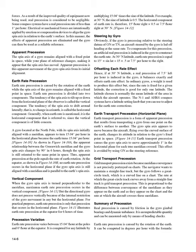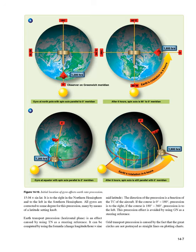Summary of precession. Real precession is caused by friction in the gyro gimbal bearings and dynamic unbalance. It is an unpredictable quantity and can be measured only by means of heading checks. Earth rate precession is caused by the rotation of the earth. It can be computed in degrees per hour with the formula 15.04 times sine latitude. It is to the right in the northern hemisphere and to the left in the southern hemisphere. All gyros are corrected to some degree for this precession, many by means of a latitude setting knob. Earth transport precession (horizontal plane) is an effect caused by using TN as a steering reference. It can be computed using the formula: change in longitude per hour times sine of mid latitude. The direction of the precession is a function of the TTC of the aircraft — if the course is 0–180 degrees, precession is to the right; if the course is 180–360 degrees, precession is to the left. This precession effect is avoided by using GN as a steering reference.